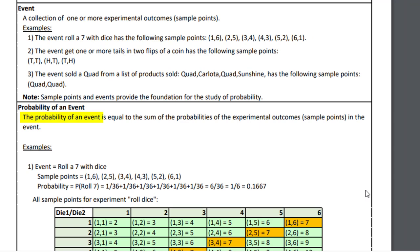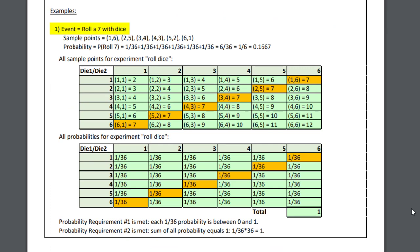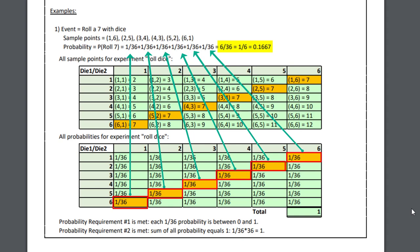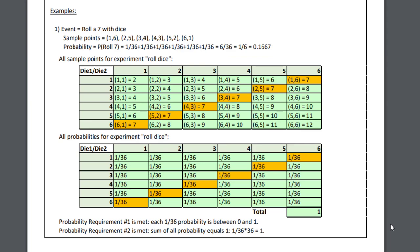The probability of an event is defined as the sum of the probabilities of the experimental outcomes in the event. If the event is 'roll a 7 with dice,' there are the 6 sample points. If the probability for each sample point is 1/36, we simply add them up: 6/36 = 1/6. Requirement 1 is met — 1/36 is between 0 and 1. Requirement 2 is also met — when we add all 36 sample points, we get 1.